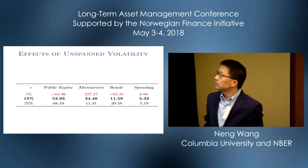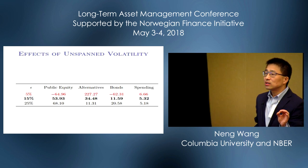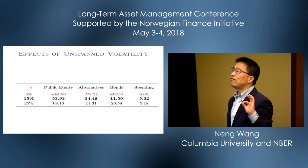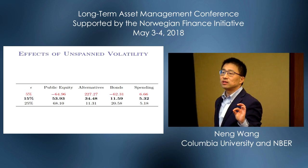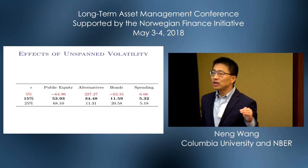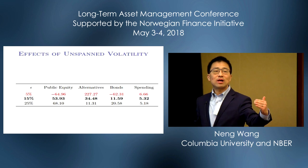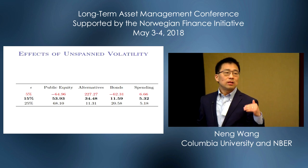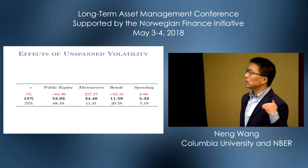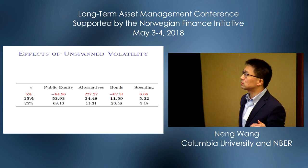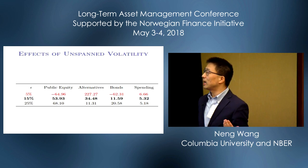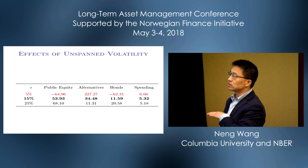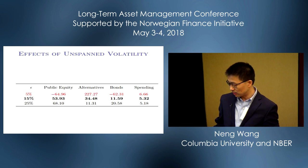The unspanned volatility epsilon turns out to be a very sensitive parameter. If your unspanned volatility is low, alternatives look great. But if your unspanned volatility is somewhat high, it doesn't look as attractive. Looking at 25 versus 5, the difference is humongous.